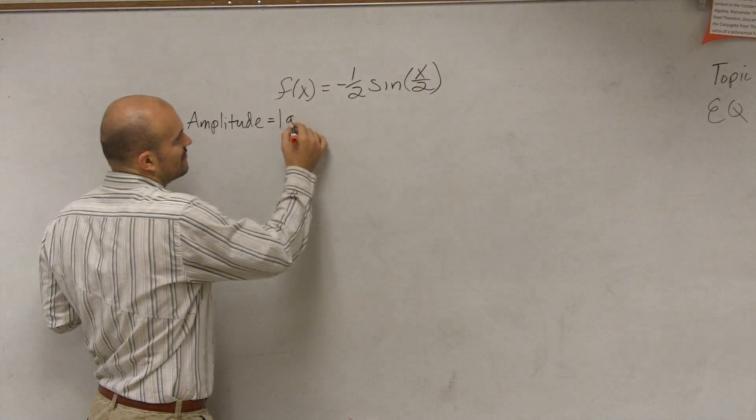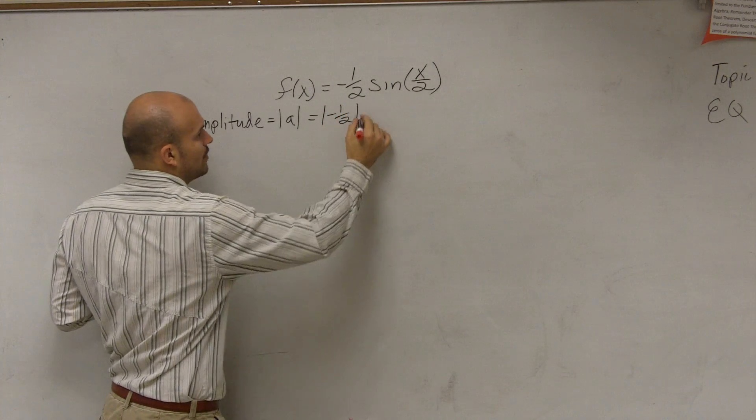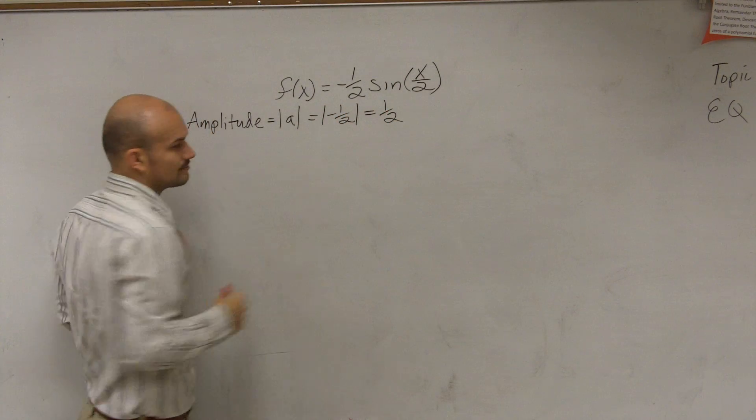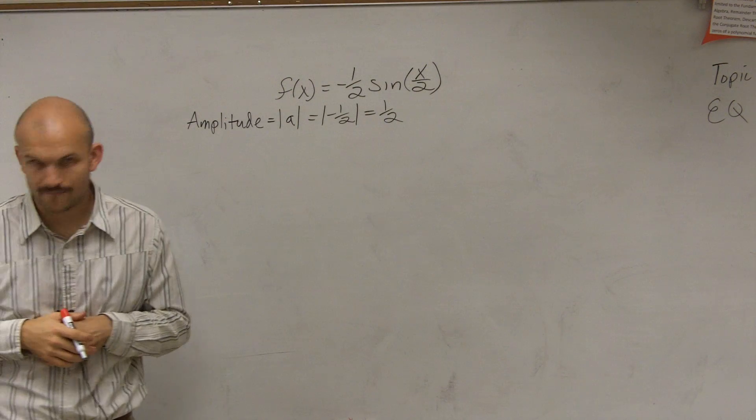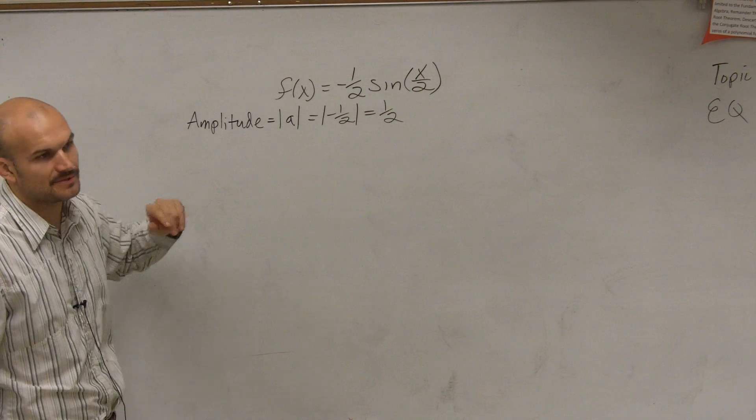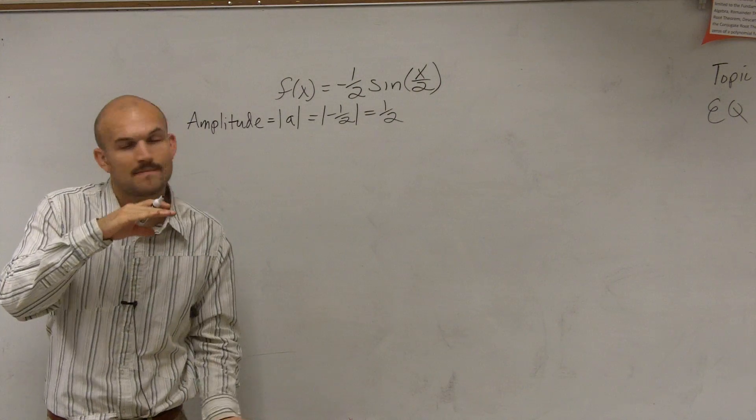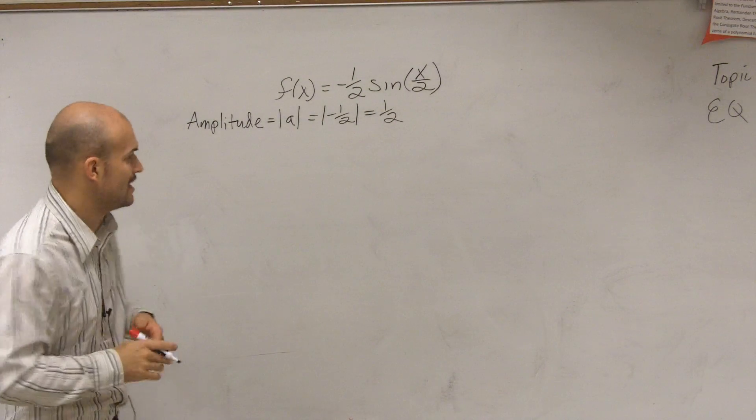So remember, the amplitude is the absolute value of a. Therefore, we have the absolute value of negative one half, which is one half. So I know my amplitude is one half. That means the half distance from my max to my minimum on my graph is going to equal one half.